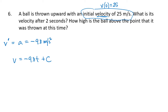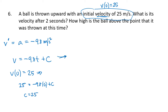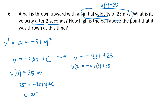Because v of 0 equals 25, plugging t equals 0 into negative 9.8t plus c and setting it equal to 25 tells us c equals 25. So our velocity function is negative 9.8t plus 25. The velocity after 2 seconds is v of 2, which is negative 9.8 times 2 plus 25, and that works out to be 5.4 meters per second.